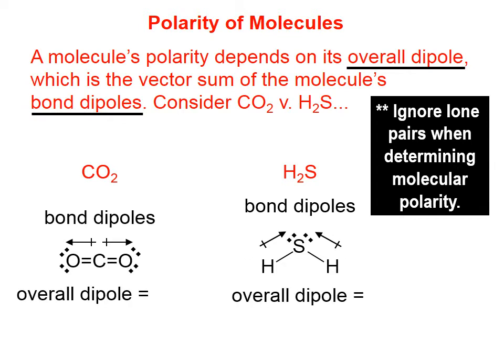So what's the overall dipole going to look like for carbon dioxide? Well, in physics, you might have been taught how to add vectors tip to tail. And if you take these two bond dipoles and you add them tip to tail, you get a net of zero. If you do the same thing with the two bond dipoles of hydrogen sulfide,